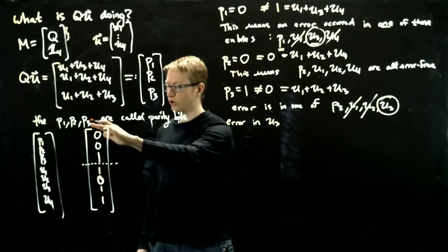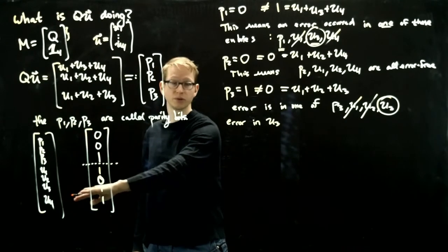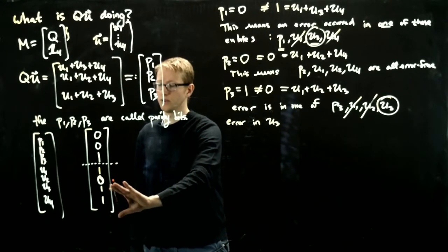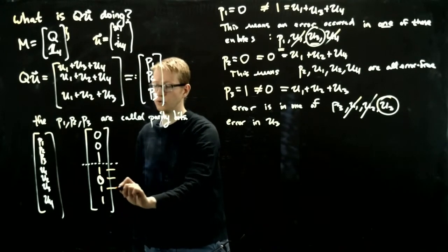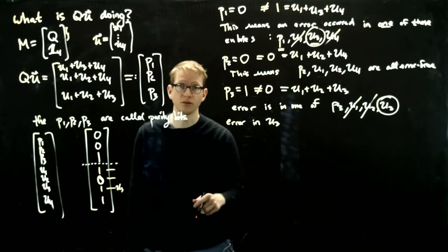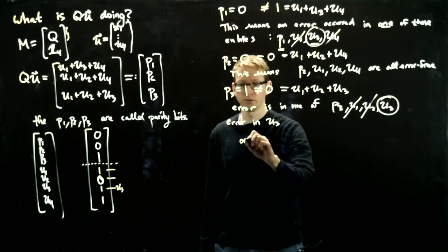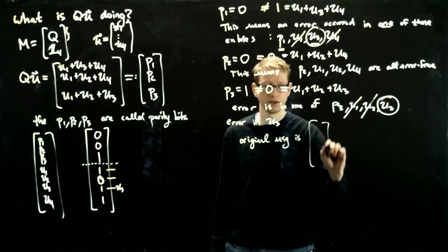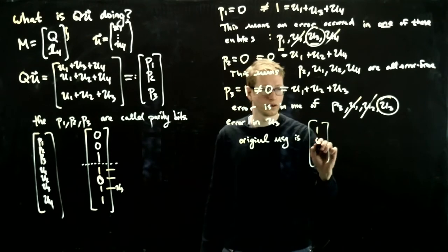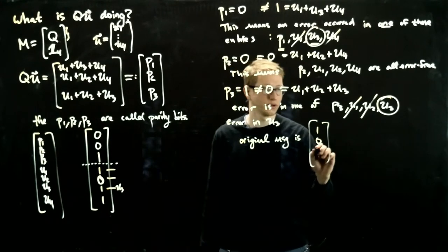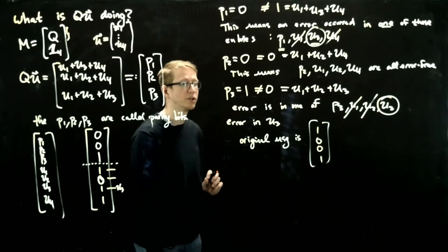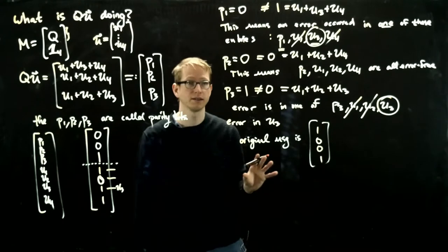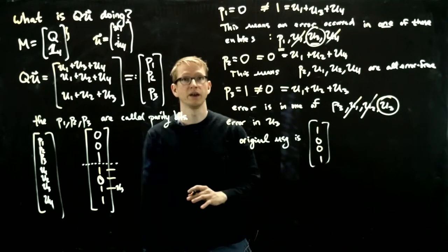So error in u3. Therefore if we go to this message we received, what we would have to alter is the u3 entry to get back the original message. Therefore the original message is the last four entries, but now we alter that third entry to get 1, 0, 0, 1 as the original message being sent. This is consistent with the answer we obtained earlier.